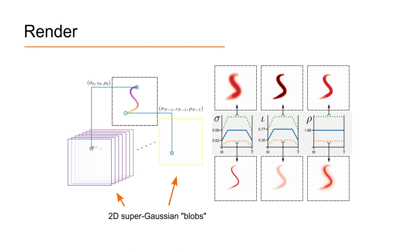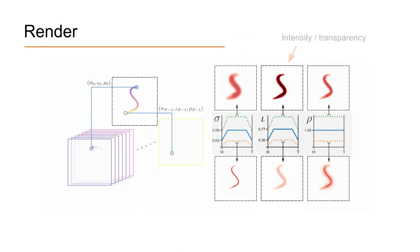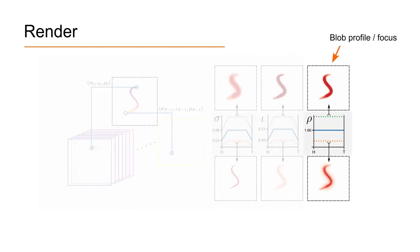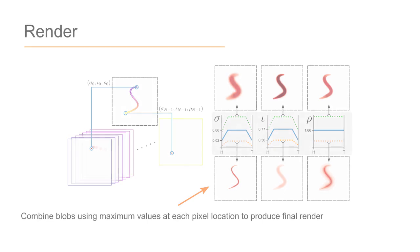Crucially, we allow the rendering parameters to differ between cameras so that quite different views can be produced across the different views. We optimize three parameters for each camera view to control the profile of the gaussian-like blobs. Sigma controls the spread, iota scales the intensity, and rho sharpens or softens the edges. The stacks of blobs are then combined to generate the complete renderings by taking the maximum pixel value across all blobs.